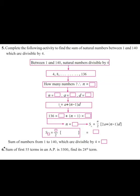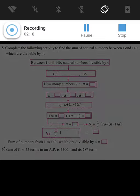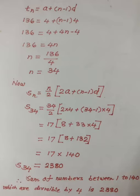We will substitute the values in the formula tn = a + (n - 1) × d. We need to find the last term, which is 136 — specifically, at which position 136 appears. By finding this, we will know the value of n, that is, the total count of numbers between 1 and 140 which are divisible by 4.